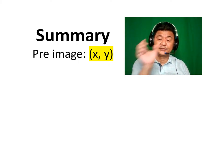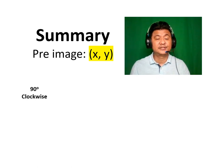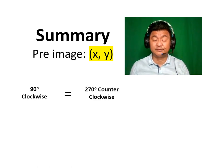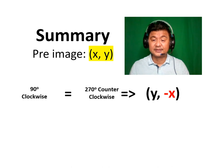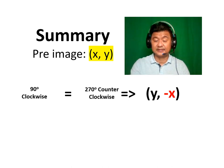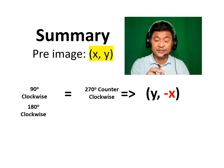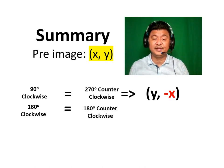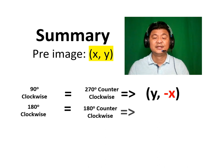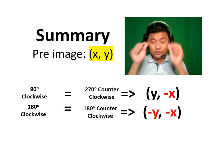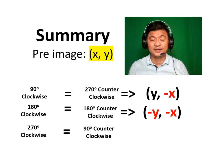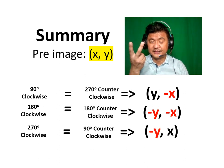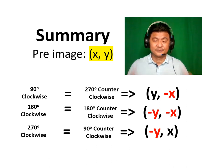Let's summarize. Remember the pre-image of (X, Y). We learned that 90-degree clockwise equals 270-degree counterclockwise, and our formula is switch first — (Y, X) — but the X gets the negative. 180-degree clockwise is the same as 180-degree counterclockwise — switch places, but both become the opposite. We also learned that 270-degree clockwise is the same as 90-degree counterclockwise — switch places, and the Y gets the negative. Good job.